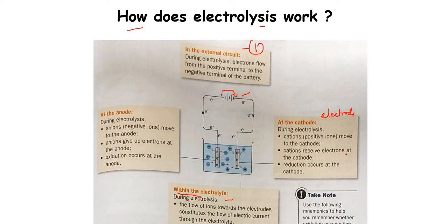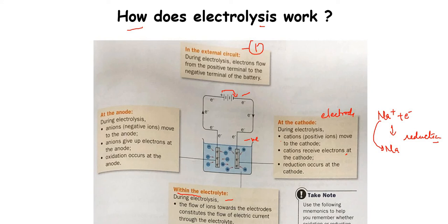The cation — for example, the sodium ion (Na⁺) — has a deficiency of electrons, so it takes electrons from the cathode and is discharged, forming sodium metal. This process is called reduction. Reduction involves gain of electrons, decrease in oxidation state, combination with hydrogen, or loss of oxygen. Here, the sodium ion gains an electron and is discharged at the cathode.